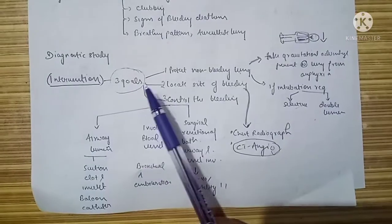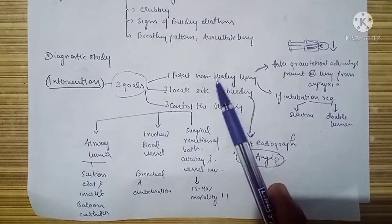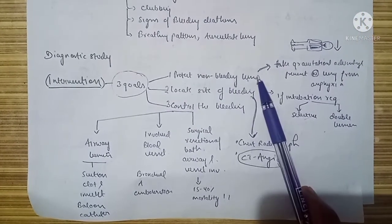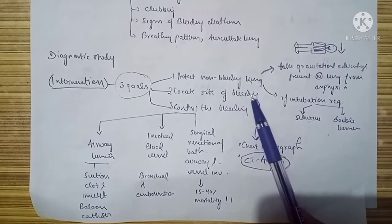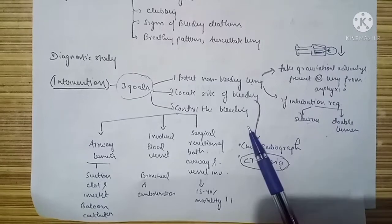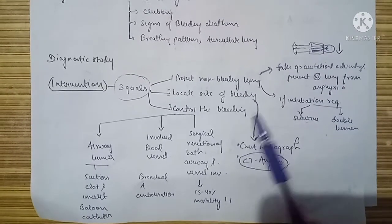Intervention must have three goals: first, to protect the non-bleeding lung; second, to locate the site of bleeding; and third, to control the bleeding.